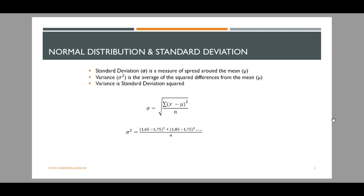Variance, sigma squared, is the average of the squared differences from the mean. And standard deviation is the square root of variance, or variance is standard deviation squared. The reason for taking the squared differences instead of simple differences is that negative and positive differences otherwise would cancel each other out.